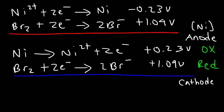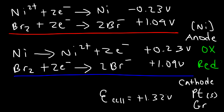Because bromine is a non-metal it cannot conduct electricity, so it cannot be used as a cathode electrode. Instead we use a platinum cathode — an inert electrode — or graphite, which is a carbon-based electrode, but platinum is more common. The overall cell potential is 1.09 plus 0.23, giving positive 1.32 volts. For a galvanic cell the cell potential must always be positive.